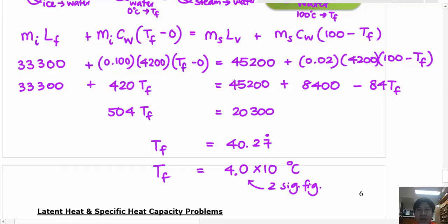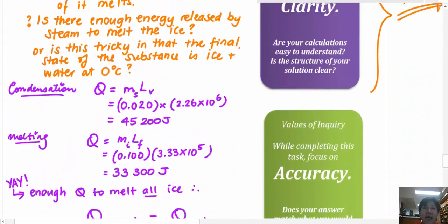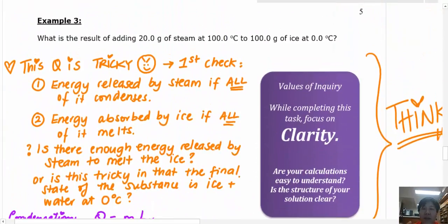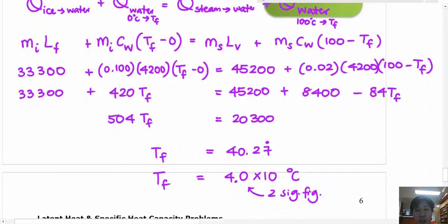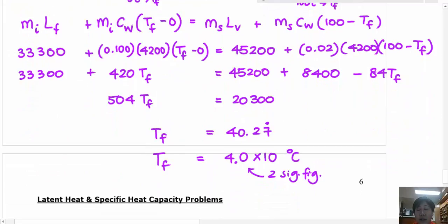Once you get that, you need to be aware that I've changed this to two significant figures because in the question itself, I only ever had two significant figures as the smallest amount of significant figure that I have, which is 0.0 degrees. Both of those are significant. So to represent 40.27 recurring in two significant figures, I need to change it into scientific notation.